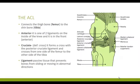ACL stands for anterior cruciate ligament. Anterior means it sits on the front of the knee. Cruciate means cross — there are two ligaments that cross the knee: the anterior cruciate ligament and the posterior cruciate ligament, named for how they attach to the tibia. The ACL attaches to the anterior or front of the tibia and posteriorly to the femur, whereas the posterior cruciate ligament does the opposite. The tibia is your shin bone.